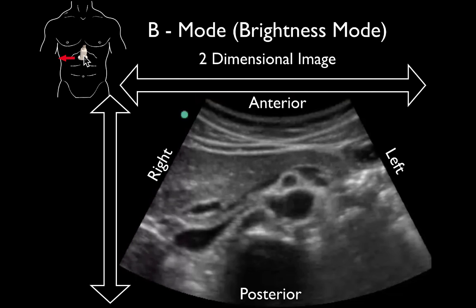Wherever we place the probe is going to be at the top of the screen. Wherever we aim that probe — think of it like a flashlight — wherever you're aiming it is what's at the bottom of your screen. So if we have the probe on the anterior portion of the patient and we're directing it straight toward the back, we'll see the posterior portion of the patient. And that is our y-axis.